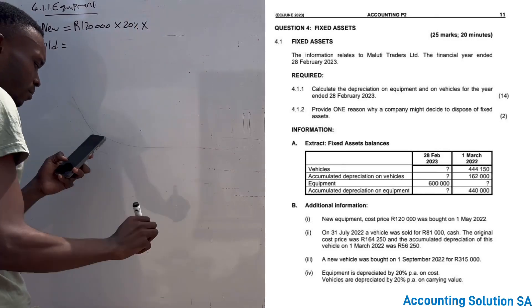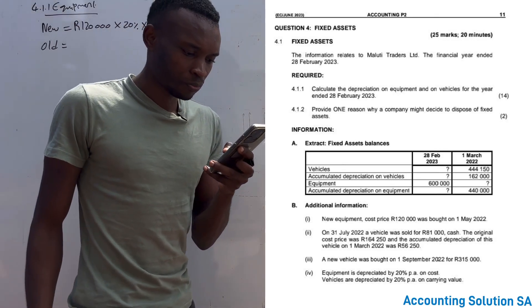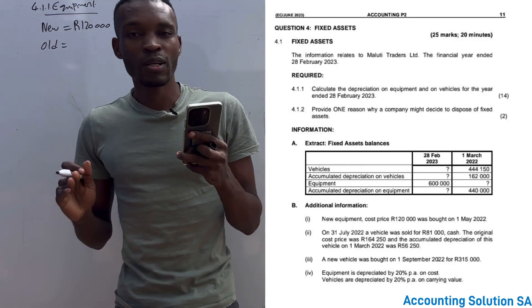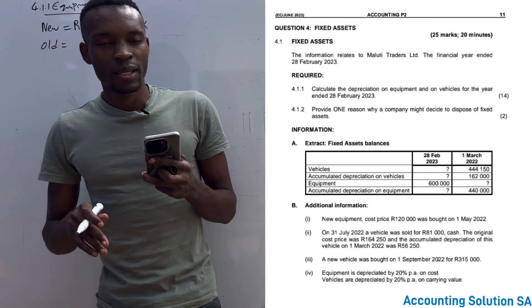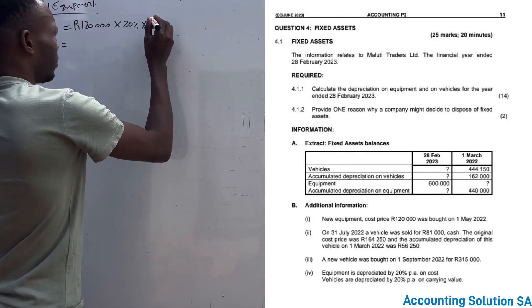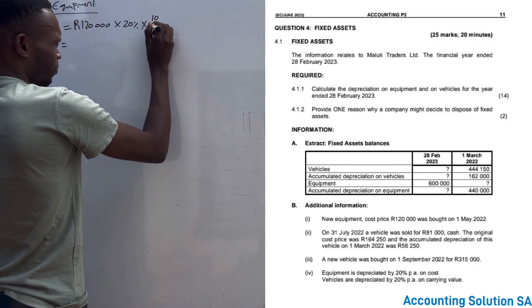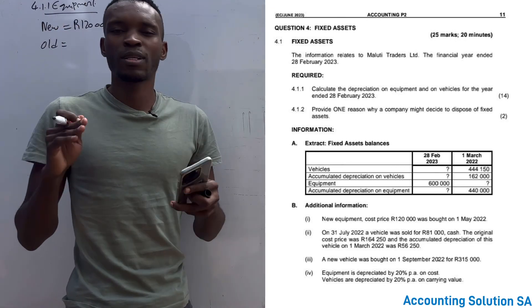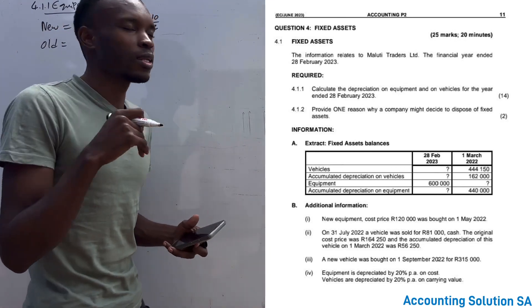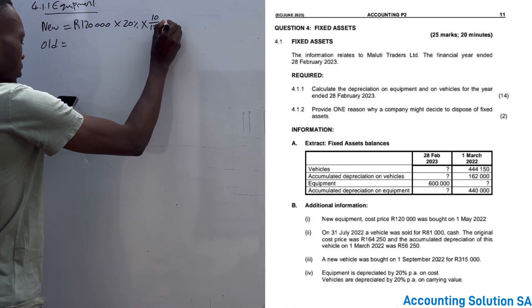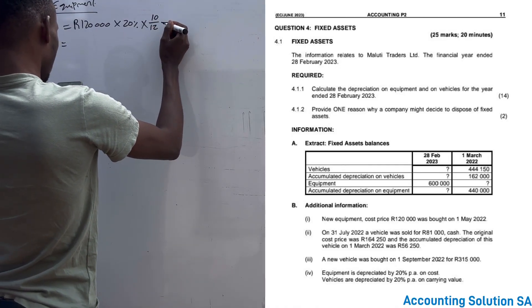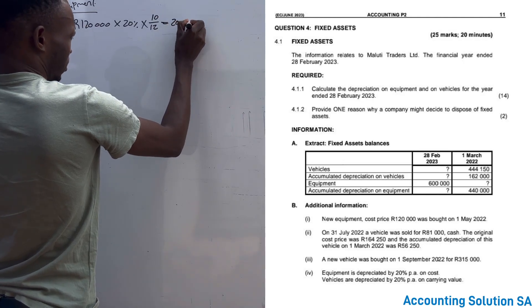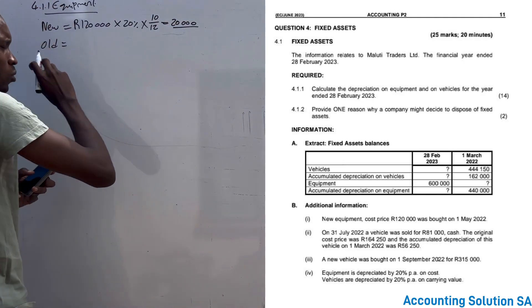We need to count the months. It was purchased on 1 May - counting from 1 May up to 28 February 2023 gives us 10 months: May, June, July, August, September, October, November, December, January, February. So we calculate R120,000 × 20% × 10/12, which gives us R20,000. This is the depreciation for the new equipment.